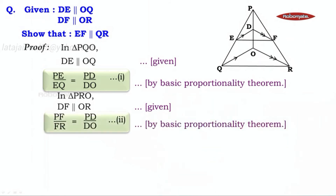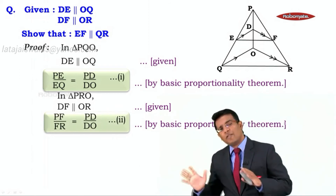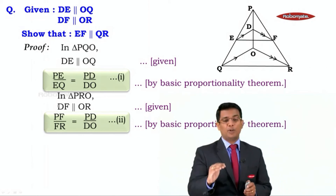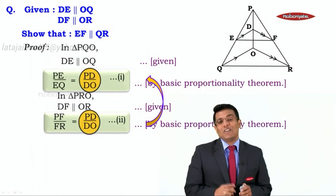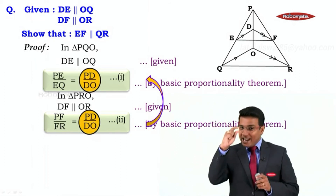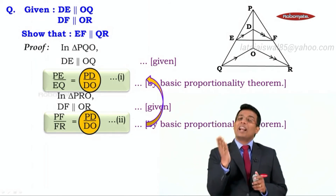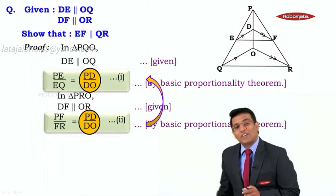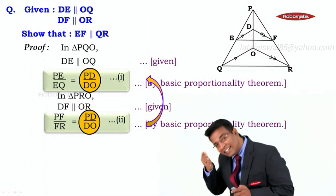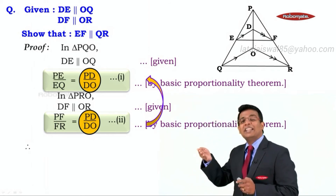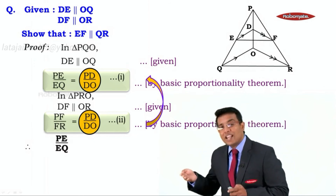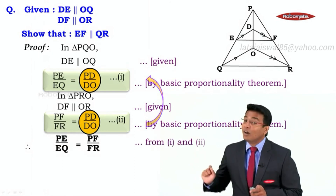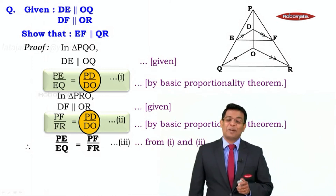So we got statements one and two. Observing both, the right-hand side — PD upon DO — is the same in both statements. Since the right-hand sides are equal, the left-hand sides must also be equal. Therefore, PE upon EQ is equal to PF upon FR. This follows from statements one and two, and is our statement number three.